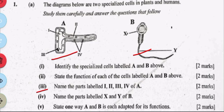Part iii asks us to label the parts of cell A. Part i is the vacuole, which is the biggest organelle in the plant cell. Part ii is the cytoplasm. Part iii is the nucleus, which controls the activities of the cell. Part iv is the mitochondrion, which is the site for respiration and produces energy.